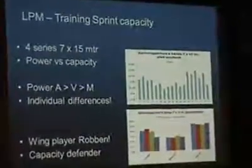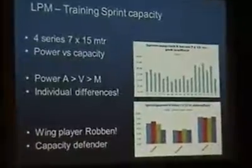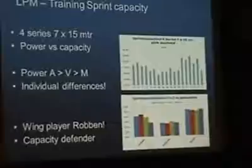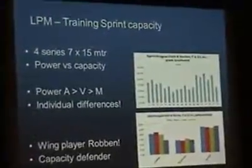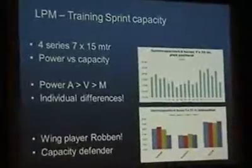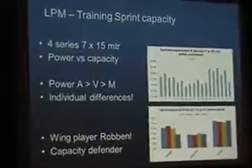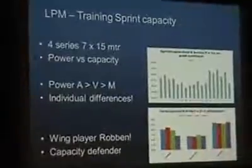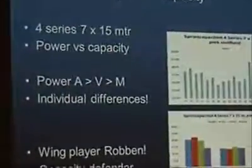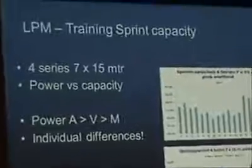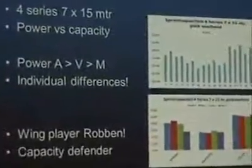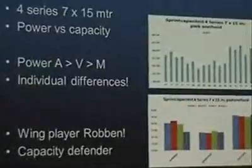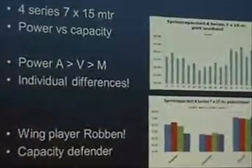This is an example of what we do in training and what kind of information we get out of it. This is a sprint capacity training — you can call it a high intensity exercise training. In this training you do 28 sprints of 15 meters, with 12 seconds rest in between the sprints and 4 minutes between the series.